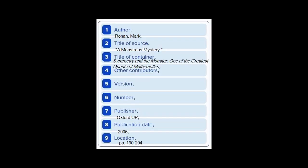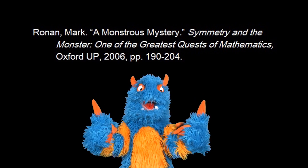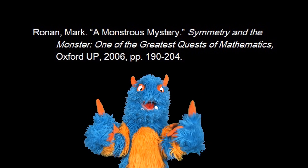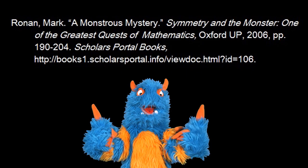Information gathered about a portion of a printed book is recorded in the template like this, and then the citation would look like this. Information gathered about the chapter in an e-book is recorded in the template like this, and then the citation would look like this.